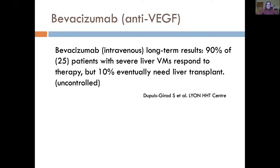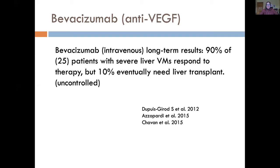The evidence for bevacizumab in liver vascular malformations comes from a study by Sifid Ziprigirud from the Lyon HHT center — around 2012 — which prospectively studied 25 patients with severe liver vascular malformations and high-output failure. 90% responded to bevacizumab, though 10% eventually needed a liver transplant. Since then, several other series of similar size have shown similar results. All studies typically agree on a very high response rate, though a certain percentage of patients do recur and get referred for liver transplantation.